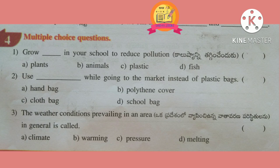Fourth Roman: multiple choice questions. Grow plants in your school to reduce pollution. Use a cloth bag while going to the market instead of plastic bags. The weather conditions prevailing in an area in general is called climate.